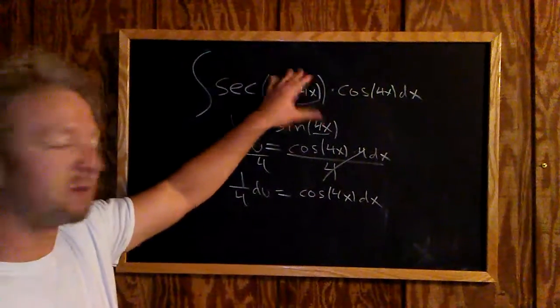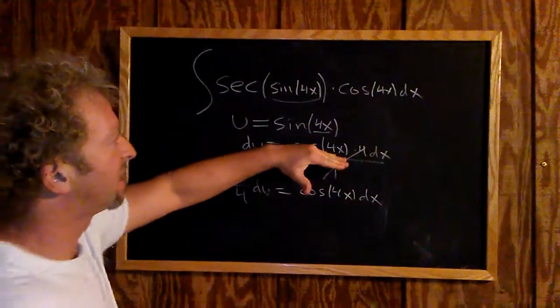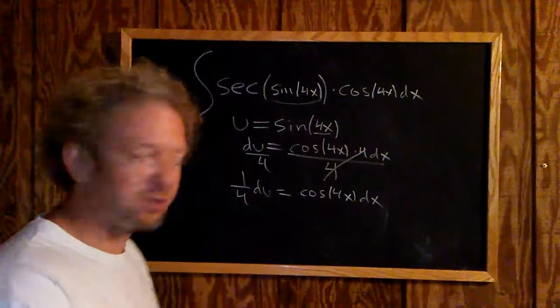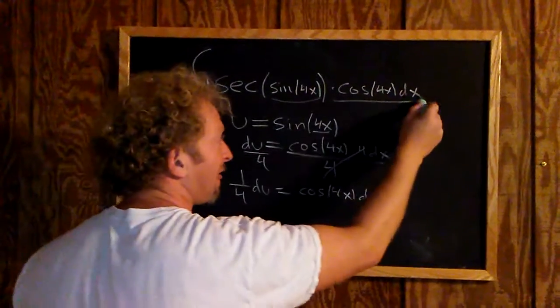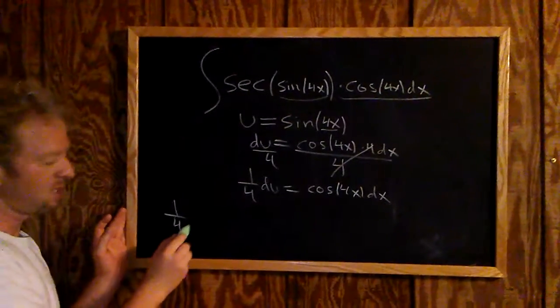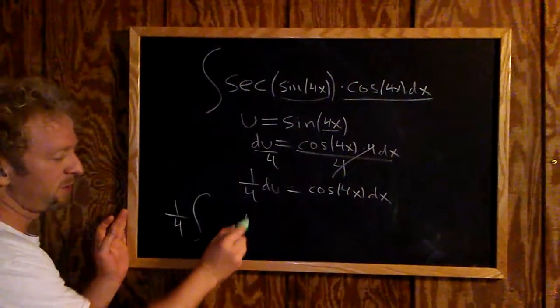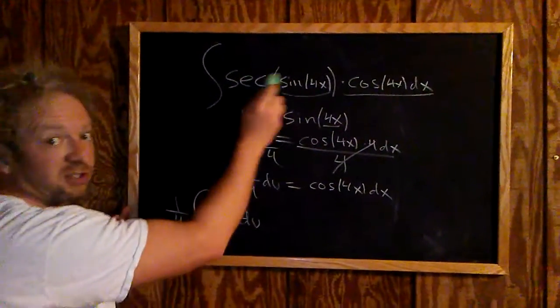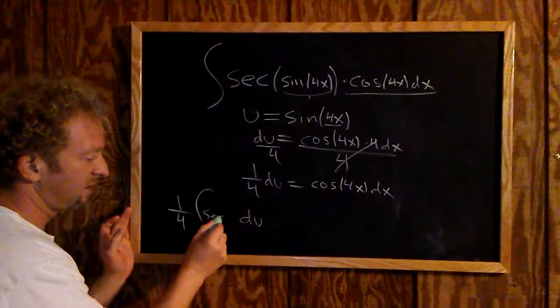Now we're ready to make the substitution. Cosine 4x dx is one-fourth du, and we're left with secant of u.